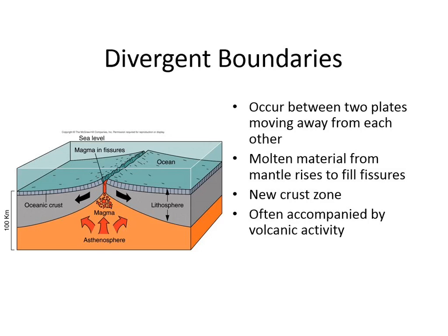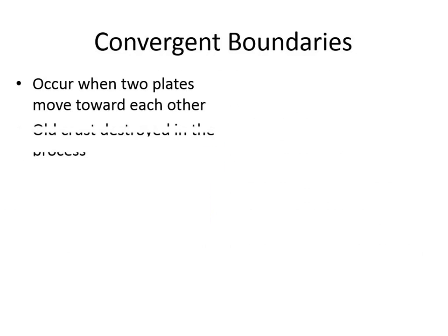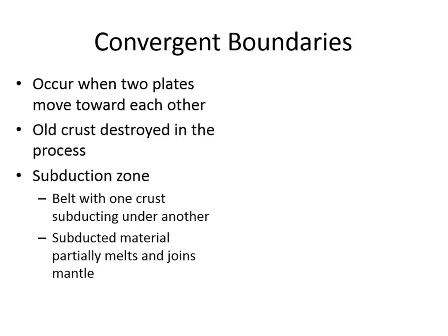Notice that we can have a ridge of material created, or we can have volcanic activity along there. How about converging plates? Two plates moving towards each other — one option is that one plate goes under the other plate. We call that place the subduction zone. The rock that goes down actually is melted again, which is part of the rock cycle. The stuff on top of the subduction zone can actually build up and create a mountain area.